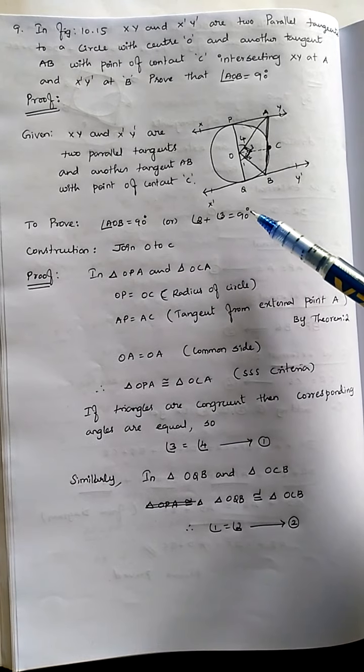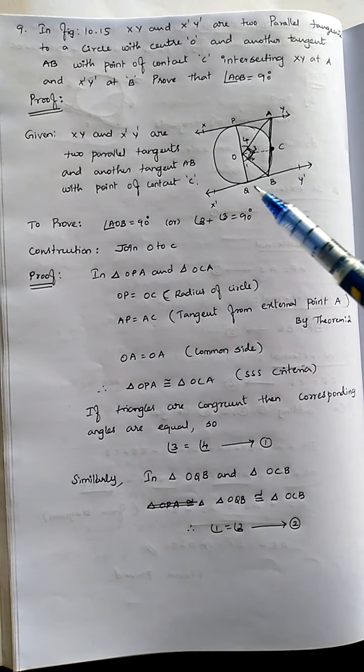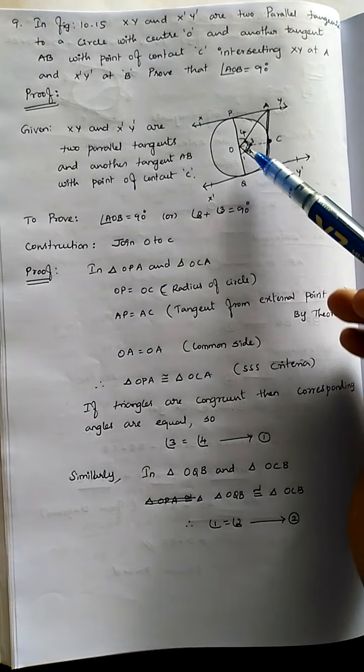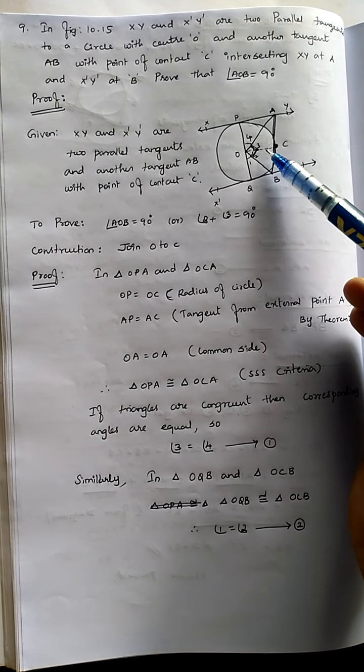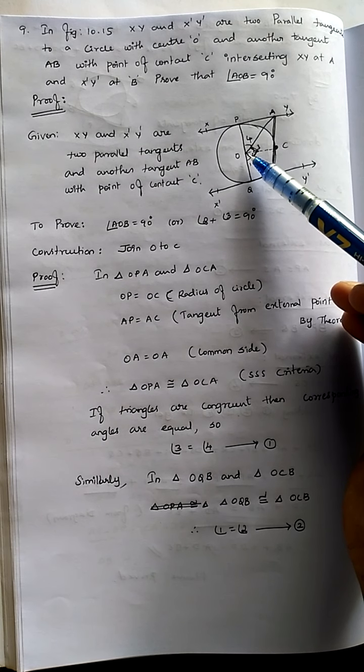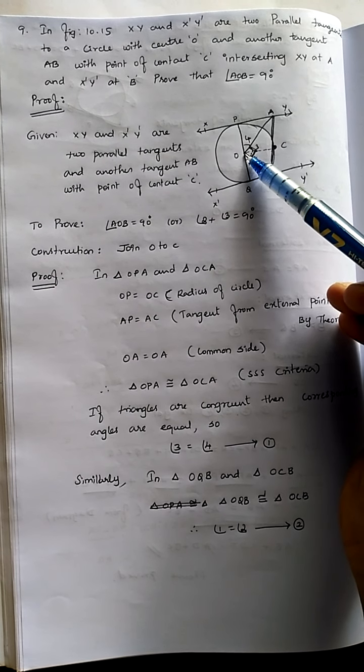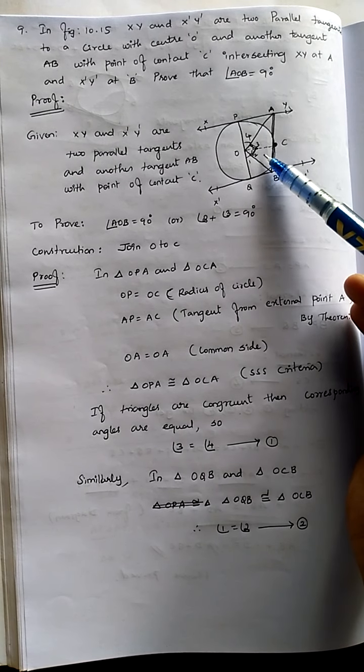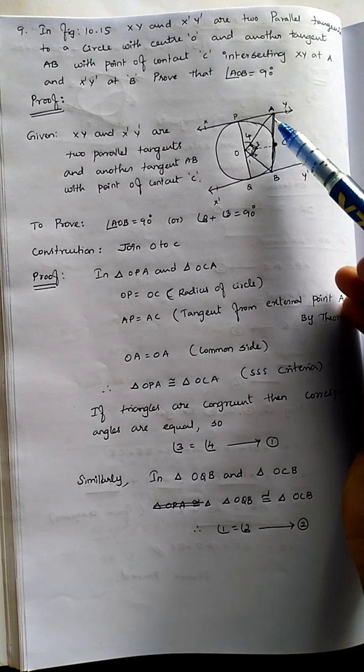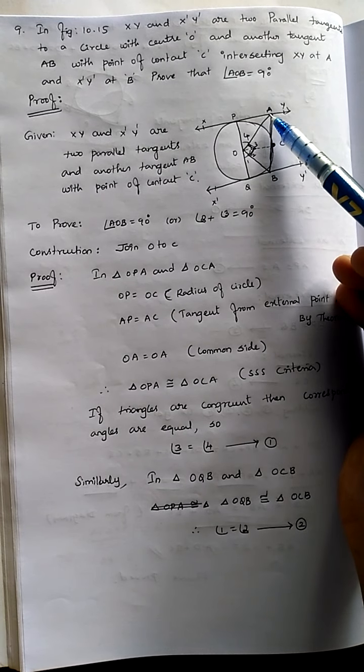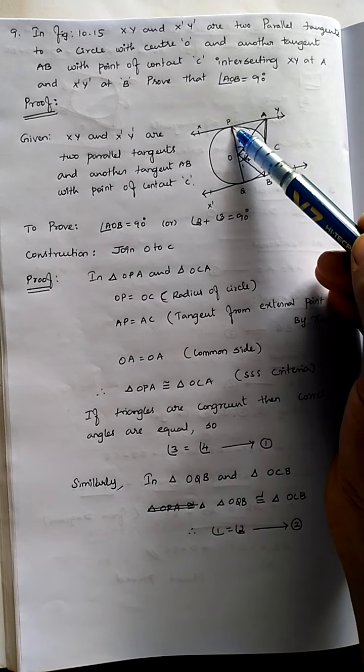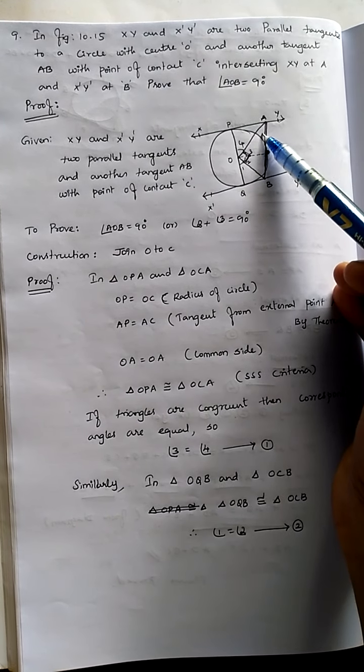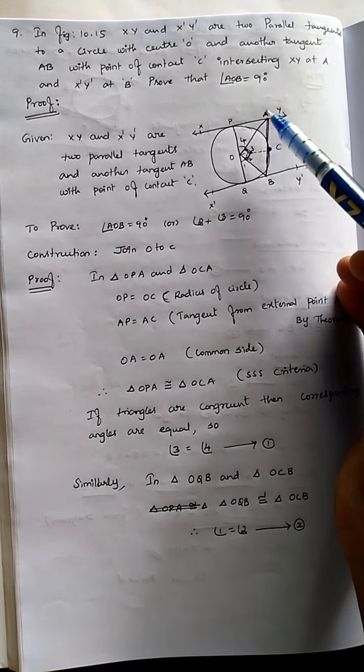For the proof, we use construction: join O to C, which is shown in dotted lines. This is not given in the question. After joining, you will get two triangles. According to theorem 2, the lengths of tangents drawn from an external point are equal, so AP and AC are equal by the second theorem.